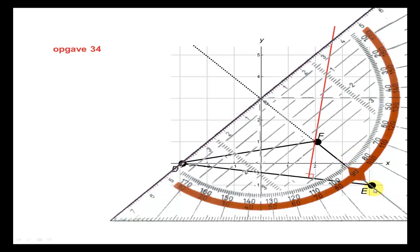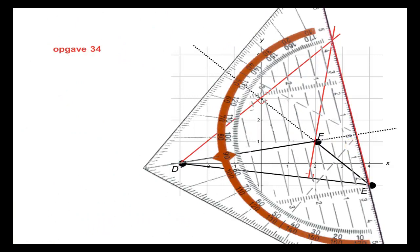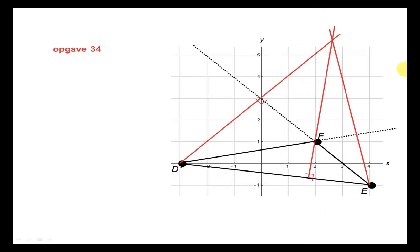Ik leg het midden van de geodriehoek over lijnstuk FE heen, schuif de onderkant richting punt D, en trek een lijn. Nu heb ik de hoogtelijn getekend vanuit D op de overstaande zijde FE, die verlengd is en buiten de driehoek ligt. Je ziet hier al dat het snijpunt van beide hoogtelijnen nu buiten de driehoek valt. We gaan vanuit E een hoogtelijn tekenen op DF — daarvoor moet ik DF ook verlengen. Dan teken ik de laatste hoogtelijn, en het hoogtepunt zit nu hier buiten de driehoek.